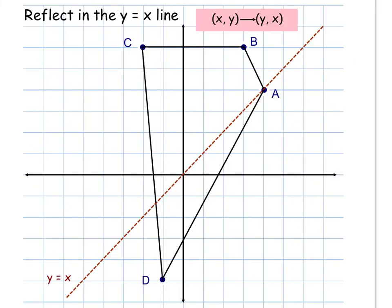The last example is a reflection in the line y = x. If we graph y = mx + b, we can see this line has a slope of 1 and a y-intercept of 0. That's why you see it starting at 0 and then going up 1 over 1, up 1 over 1 to get the line y = x. The rule for a reflection in the line y = x is: your ordered pair (x, y) becomes the ordered pair (y, x).